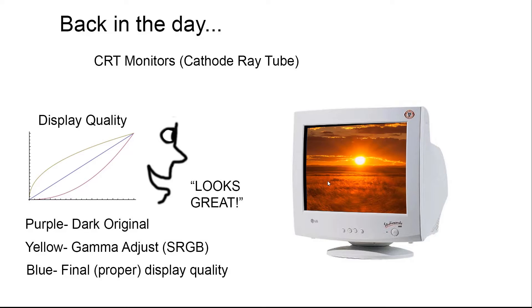They got around this issue by brightening the image itself on export. So there's an embedded gamma or brightening in all the JPEGs you've ever seen — you don't even know it. They're actually being brightened up so that when you look at them on a monitor, they look correct.